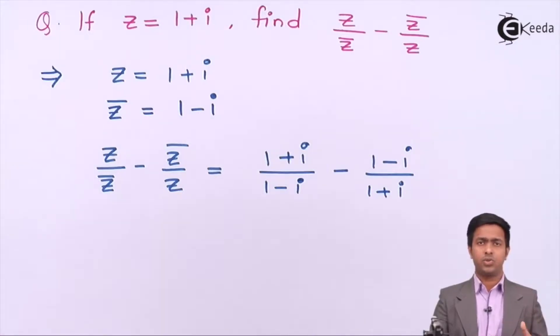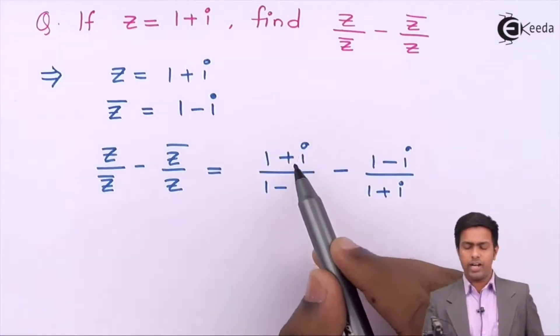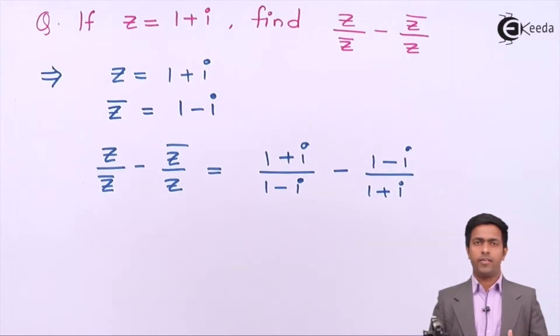Now there are many methods to solve it. One is we can divide these two numbers and apply the concept of algebra of complex numbers to divide each number. Or what we will do is we will take LCM here. After that we will convert that number into one single complex number and then we will try to bring it in the standard form. We will apply that approach.